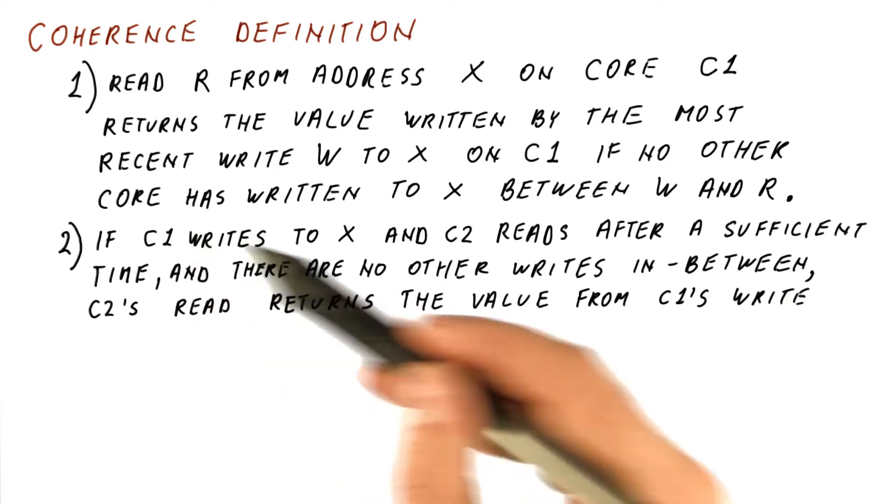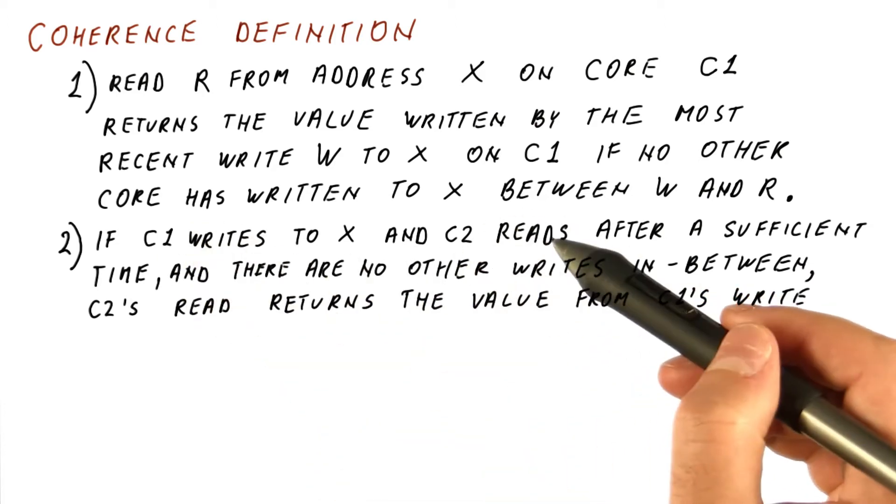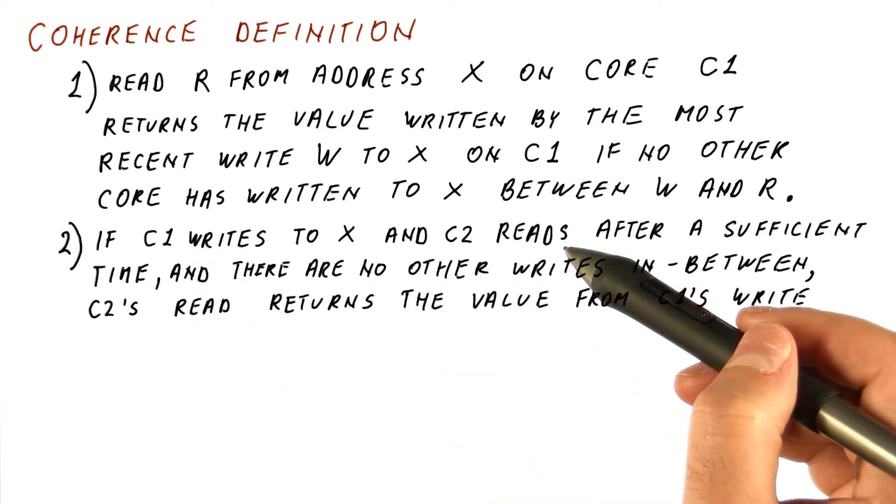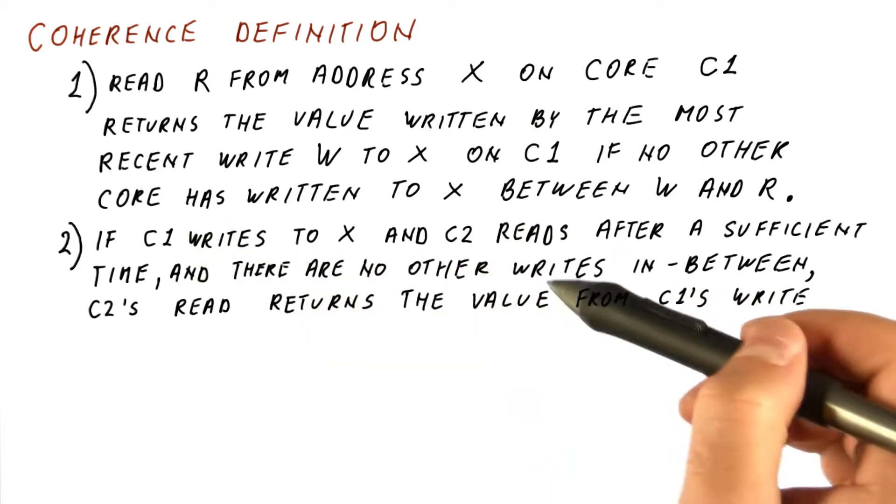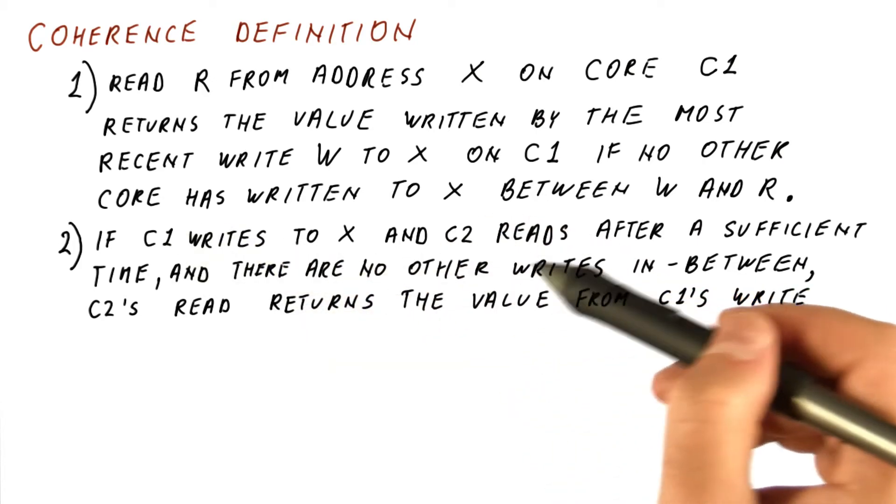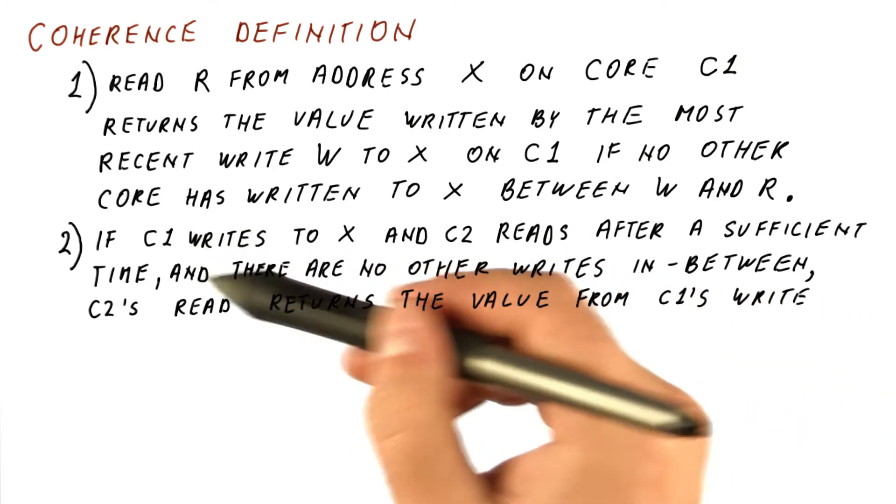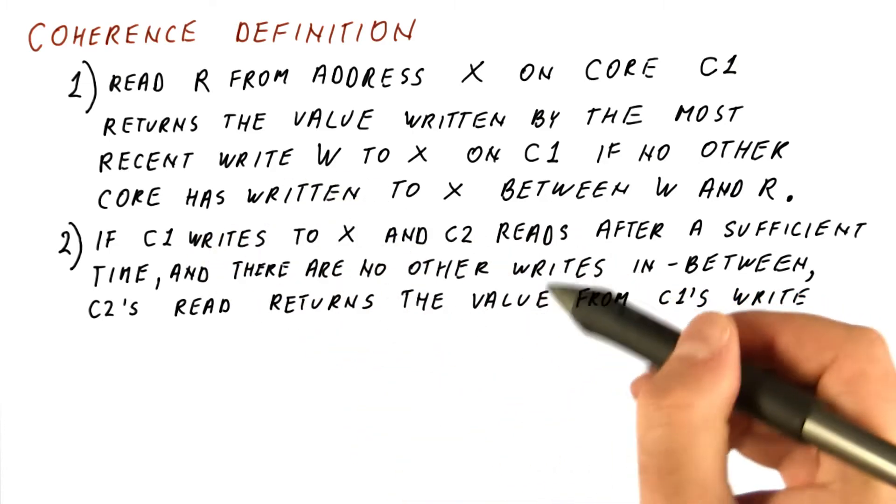So pretty much if there is a write and the read happens sufficiently after that write, then the read has to read what the write wrote, except if there was another write in between, in which case the read is allowed to return that value instead of this one.